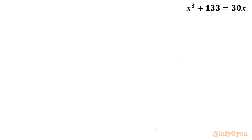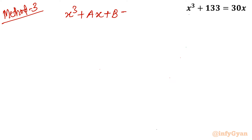Method number 3 is Cardano's method or formula. This formula is applicable when there is no x squared term; otherwise we have to take the longer path. For the equation x cubed plus ax plus b equal to 0, we substitute x equal to alpha plus beta, which gives solutions in cubic form. Alpha cubed equals minus b over 2, plus square root of b squared over 4 plus a cubed over 27.